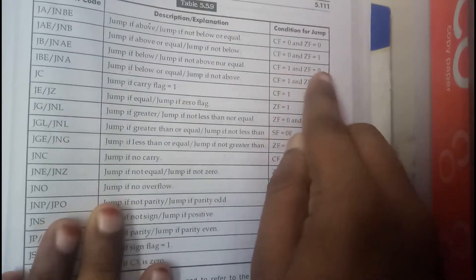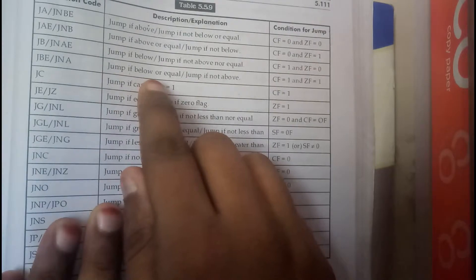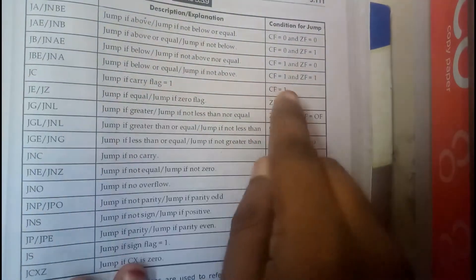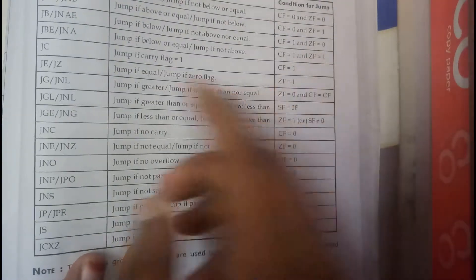CF equal to 1 and ZF equal to 0. JBE, jump if below or equal, CF equal to 1 and ZF equal to 1. Jump if carry, if CF equal to 1. Jump E, if zero flag, that is nothing but zero flag equal to 1. JG,